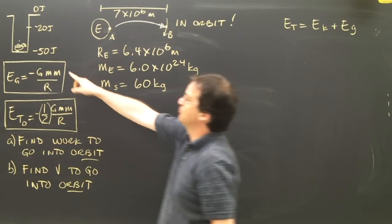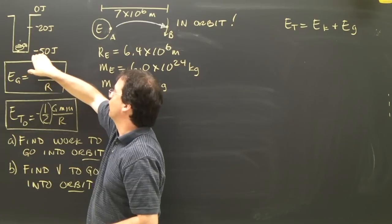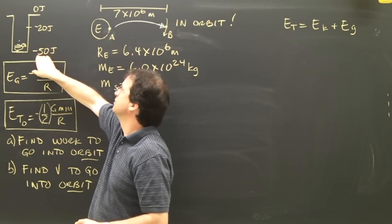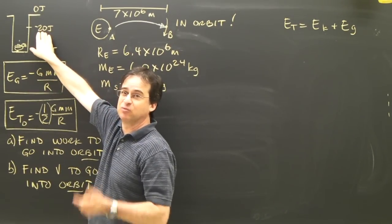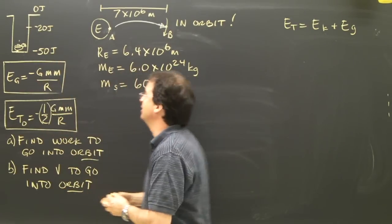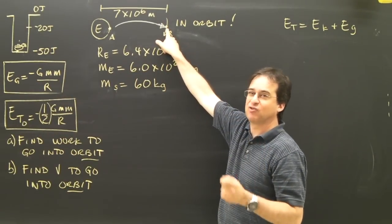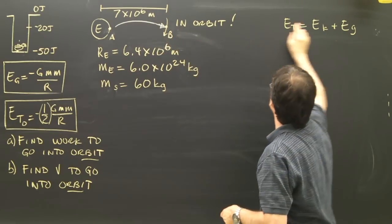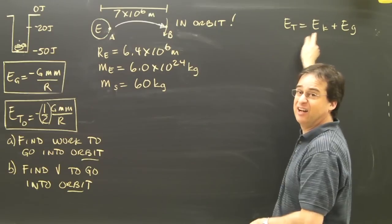So if I look at my example here with the chicken as I used before, I need to know how much energy it has where it is and how much energy it has where it needs to be and what the difference is. But in this case, when it's up here, it doesn't have just gravitational energy. It has gravitational energy and kinetic energy.